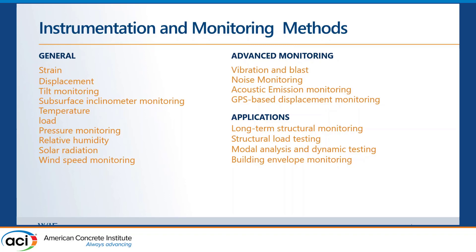We also have GPS-based displacement monitoring, which is a newer technique. One of the main advantages in a field application is that usually if you're trying to measure displacement in the field, you need something to react off — a fixed point. For example, to measure deflection of a girder, your wires for a string potentiometer would run from the ground, which is not feasible in many cases. With GPS displacement on the girder and a base station elsewhere, you can use the differential movement between the two points to measure displacement.